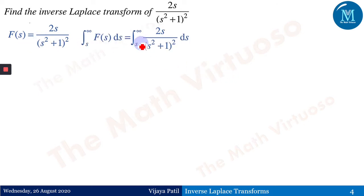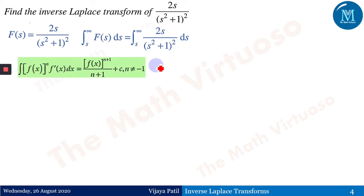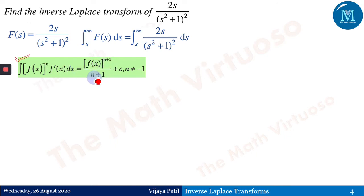We need to compute the integral from s to infinity of F(s) ds. Before doing that integration, let us recall the formula: the integral of [f(x)]^n · f'(x) dx equals [f(x)]^(n+1) / (n+1) + C, where n ≠ −1.